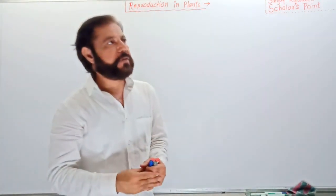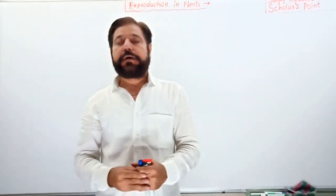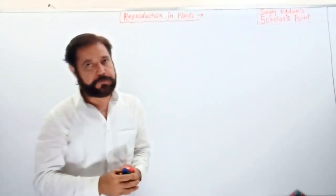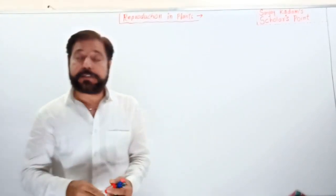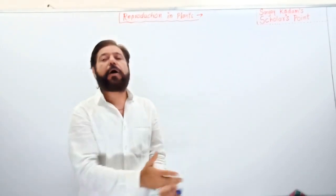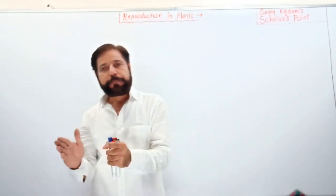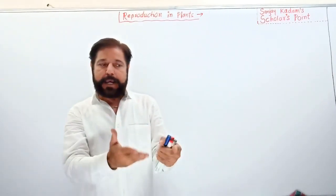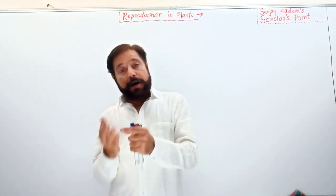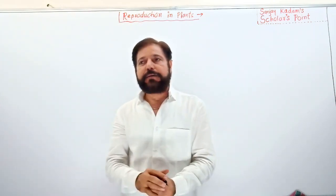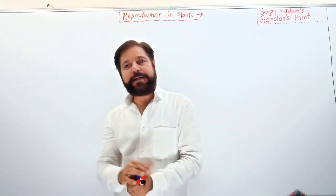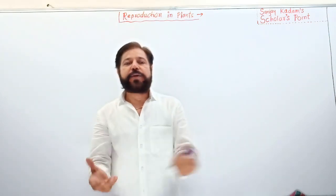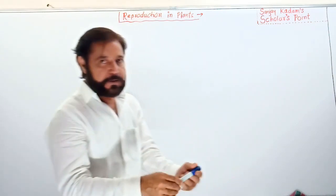Hello friends, my name is Sanjay Kadam and today we will study about reproduction in plants. First of all, we will understand the definition of reproduction. Reproduction is a process by which a parent produces offspring of its own kind — one organism produces one or many organisms of its own type, either similar or dissimilar to the parent.